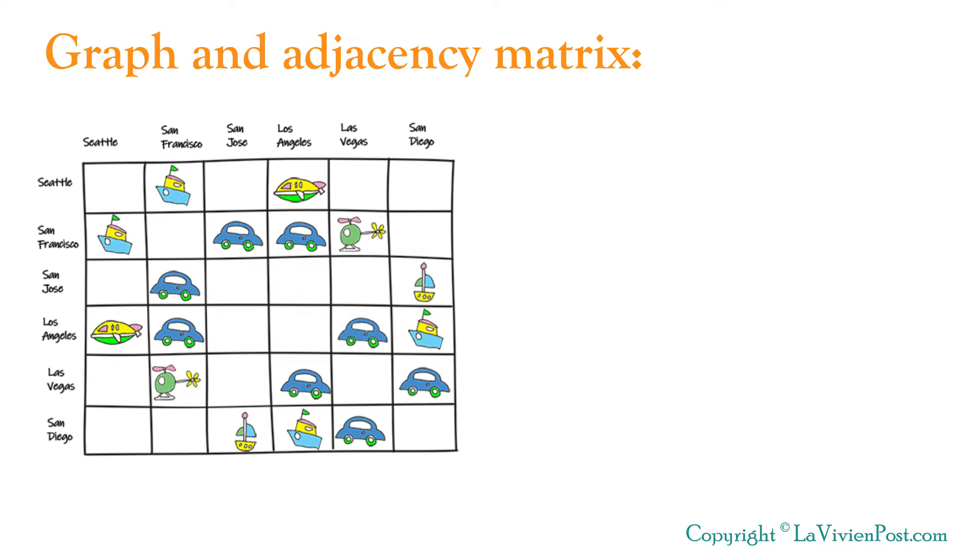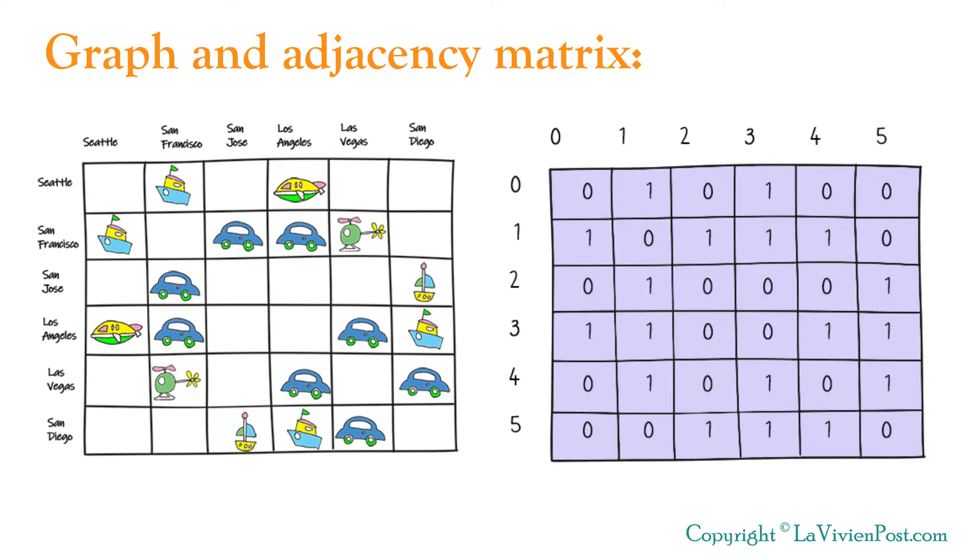The matrix can be used to represent a graph. It is called an adjacency matrix. A graph of v nodes can be represented as a v by v matrix. If there is an edge from node u to v, we can put the value 1 at that cell. If there is no connected edge between them, or the node itself, the value in the cell is 0.